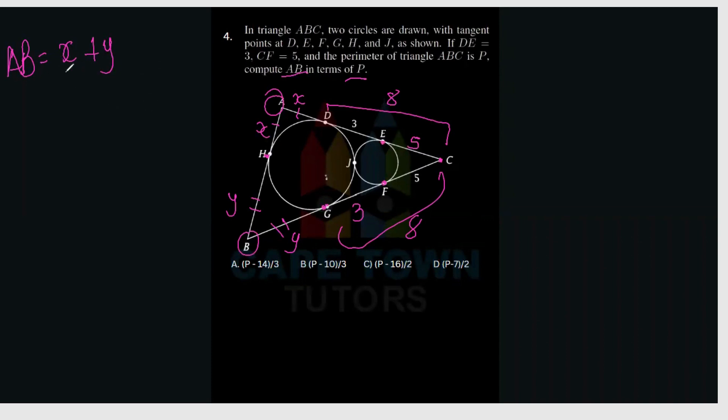So then we would have to compute the perimeter of the triangle, but ultimately what we're looking for in all of this is to find AB in terms of P. So what is AB first? Well, AB is this side, and this side is basically going to be equal to X plus Y. So AB is equal to X plus Y. Alright, cool.